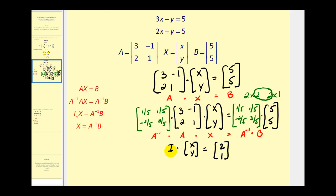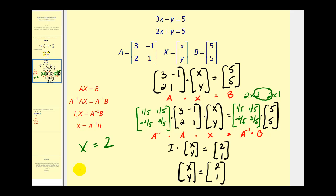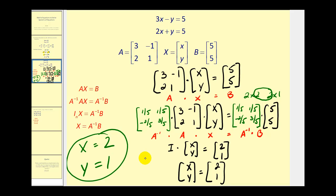Lastly, we know that the identity matrix times the variable matrix would just be the variable matrix. So we now have the solution to this system where X equals 2 and Y equals 1. Using matrices to solve a system of equations is a great option, especially if you have technology to help you find the inverse matrices. Let's go ahead and take a look at another one.